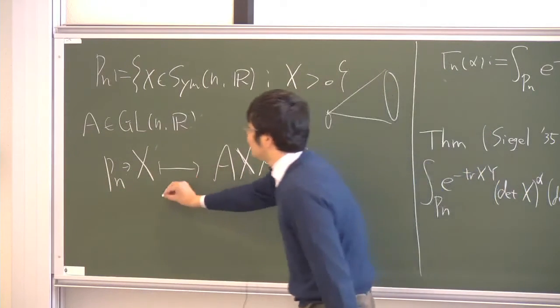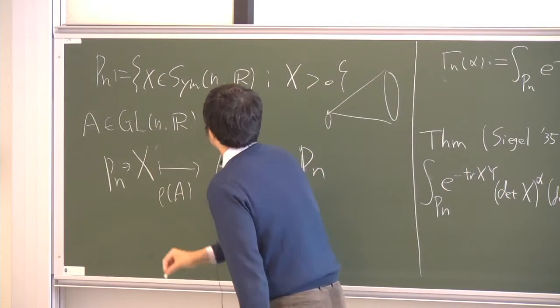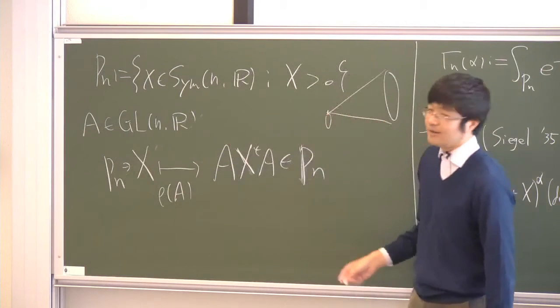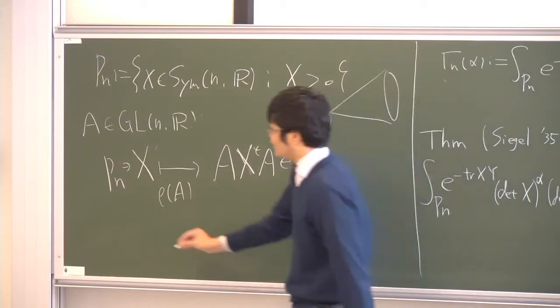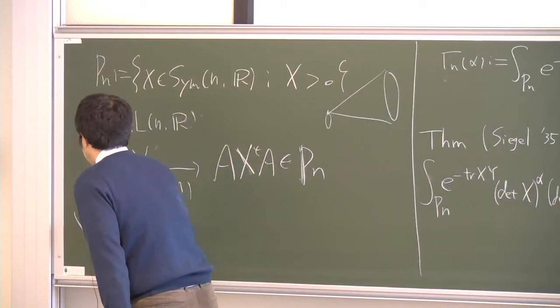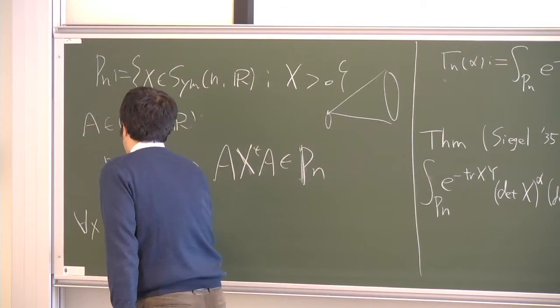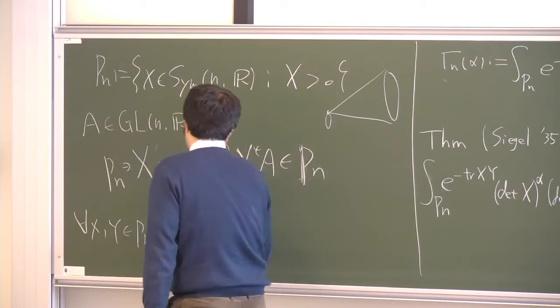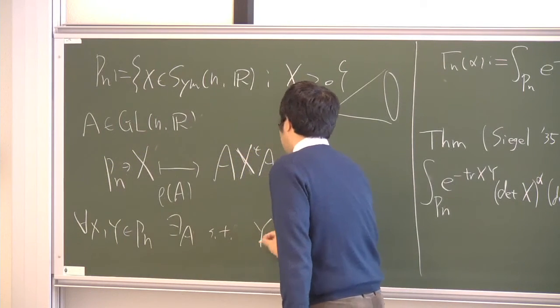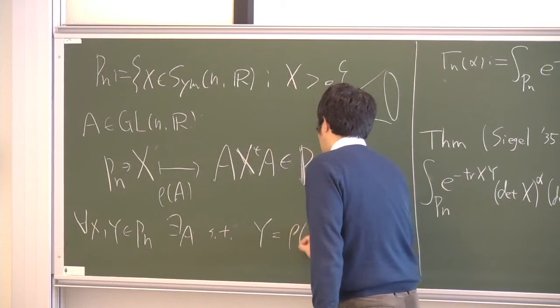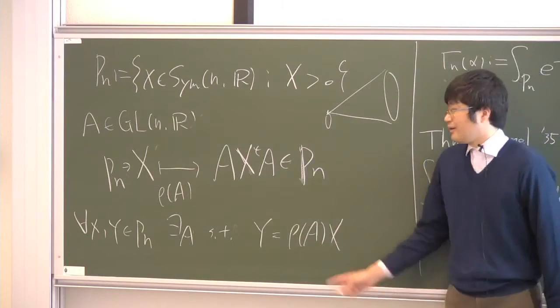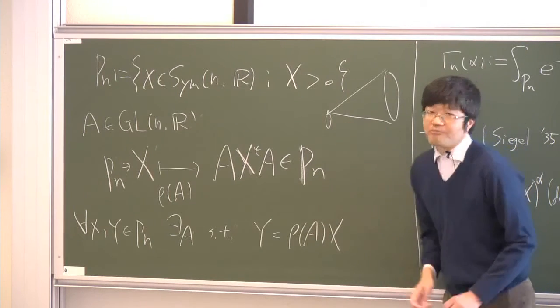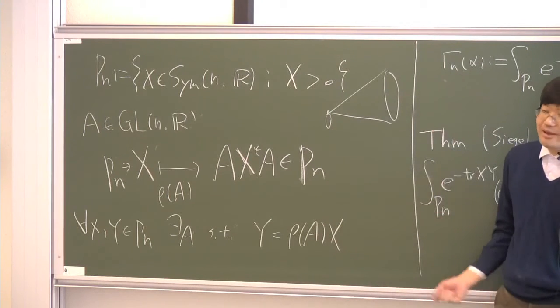Then the homogeneity of the cone P_n means that for any two points in the cone P_n, there exists A such that these two points are mapped each other by this linear automorphism. This means that the cone P_n has a rich symmetry in geometric meaning.